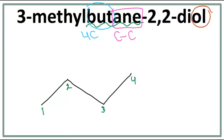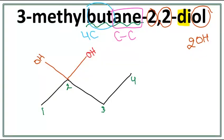We have an 'ol' here — this tells us that this is an alcohol, meaning we have a hydroxyl group, which is OH, attached to this butane. 'Di' tells us that we have two OHs — two groups of OHs attached to this butane. One of them is on the second carbon, the other one is also on the second carbon. We also have a methyl attached, which is on the third carbon.